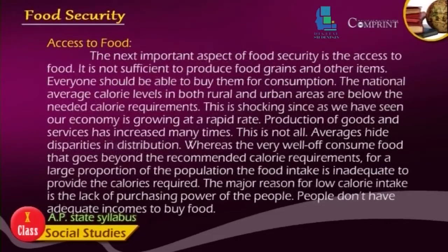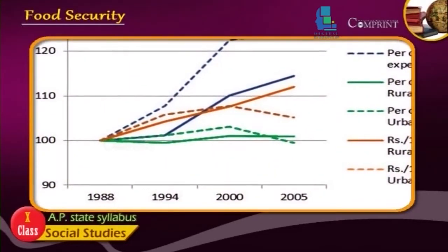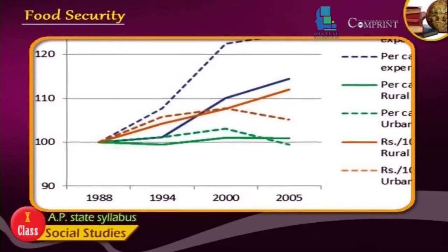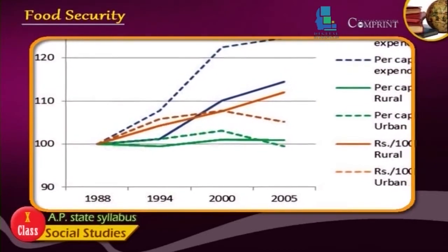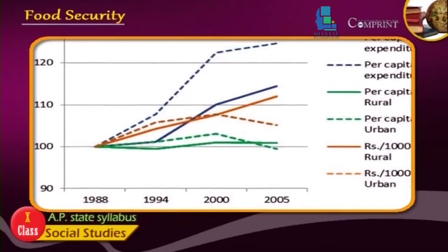The next important aspect of food security is access to food. It is not sufficient to produce food grains and other items — everyone should be able to buy them for consumption. The national average calorie levels in both rural and urban areas are below the needed calorie requirements. This is a shocking situation even as our economy is growing at a rapid rate and production of goods and services has increased many times.